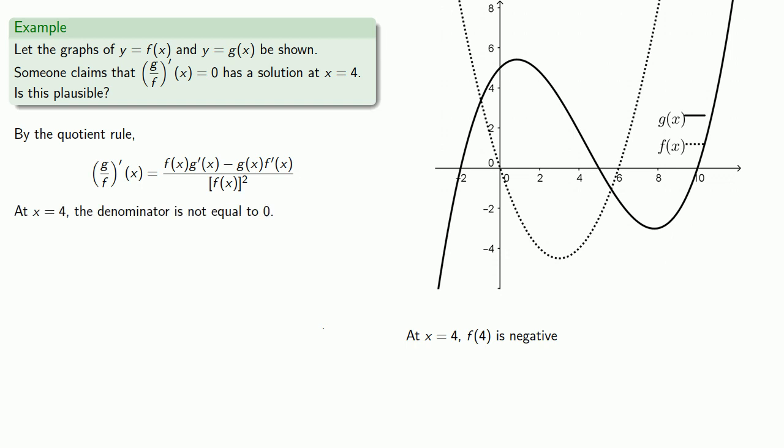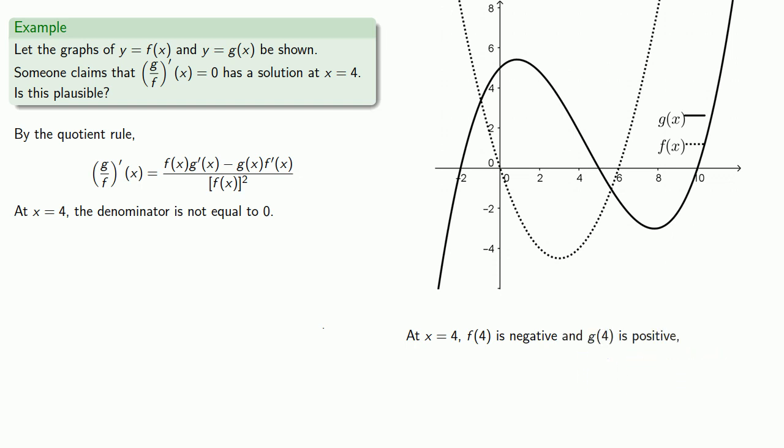How about g of 4? g of 4 is going to be the y value on the graph of y equals g of x when x equals 4, and the sign of g of 4 is positive. f prime of 4 and g prime of 4 are going to be the slopes of the lines tangent to the graphs at x equals 4. Sketching those tangent lines, we see that f prime of 4 seems to be positive and g prime of 4 seems to be negative.